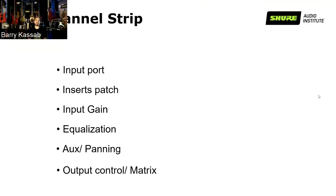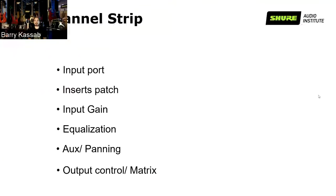In addition to the input port, you have something called the insert patch, which is usually an unbalanced TRS. This is a point where you can interrupt the input signal, send it out to an effect unit, and bring it back in again to continue the signal path. The TRS tip sends the signal, the ring receives it, and the sleeve is shared. This was very useful in the old days because mixers did not have any effects on board — the only effect was an equalizer, specifically a parametric equalizer.